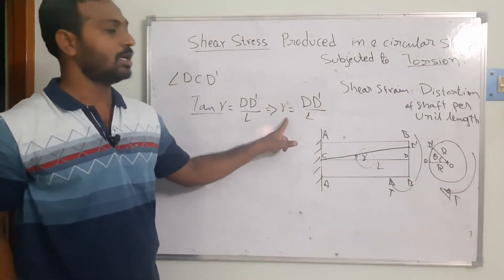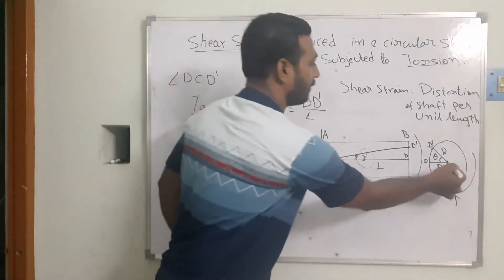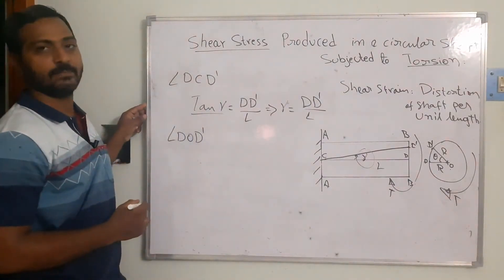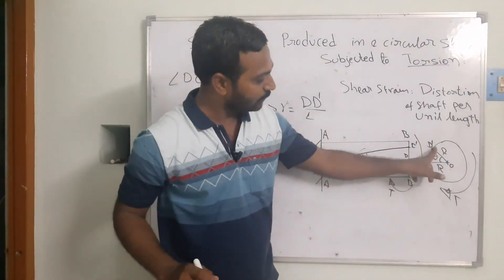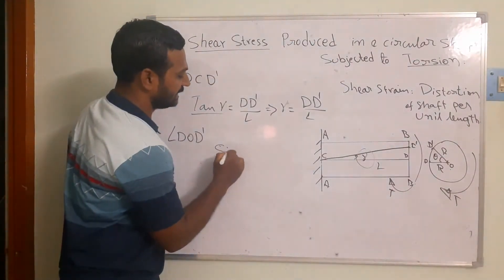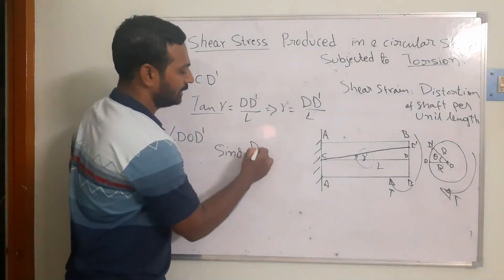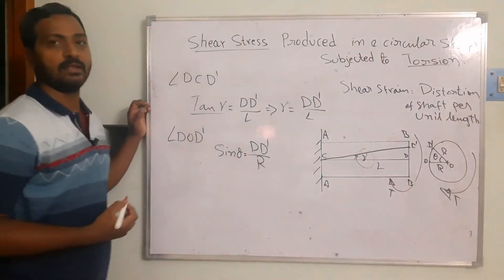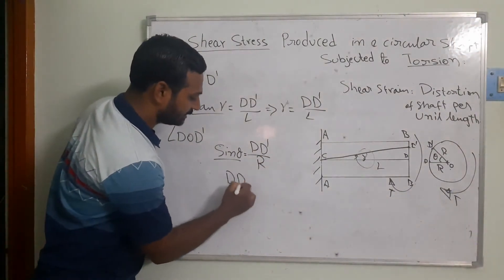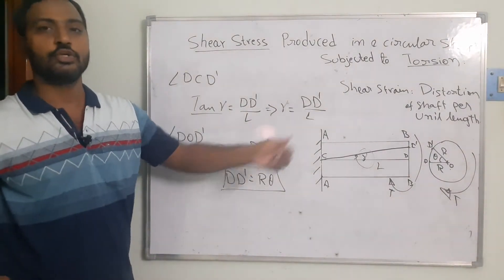To find DD' in terms of radius and angular twist, I consider triangle DOD'. Here, theta is the angle, the opposite side is DD', and the adjacent side is R. So sin θ = DD' / R. Since theta is very small, sin θ ≈ θ, giving DD' = Rθ.